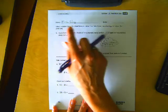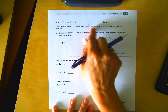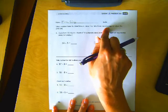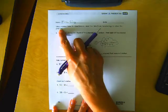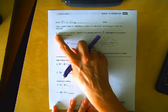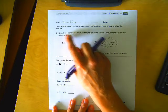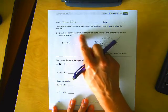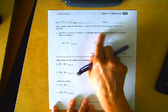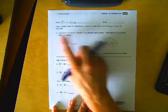Use a number bond to show how you use the take from 10 strategy to solve the problem. Number 1. Kevin had 14 crayons. Eight of the crayons were broken. How many of his crayons were not broken?